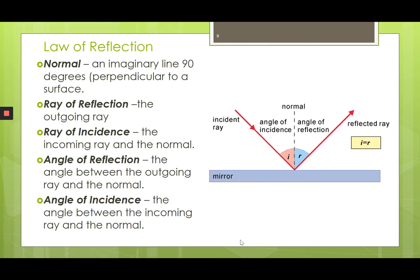A few key elements to know: the normal line, which is perpendicular to the surface; the incident ray, which is the ray coming in toward the mirror; the reflected ray, which is the ray going away from the mirror; the angle of incidence, which is the angle between the incident ray and the normal; and the angle of reflection, which is the angle between the reflected ray and the normal. The law of reflection states that the angle of incidence is equal to the angle of reflection.